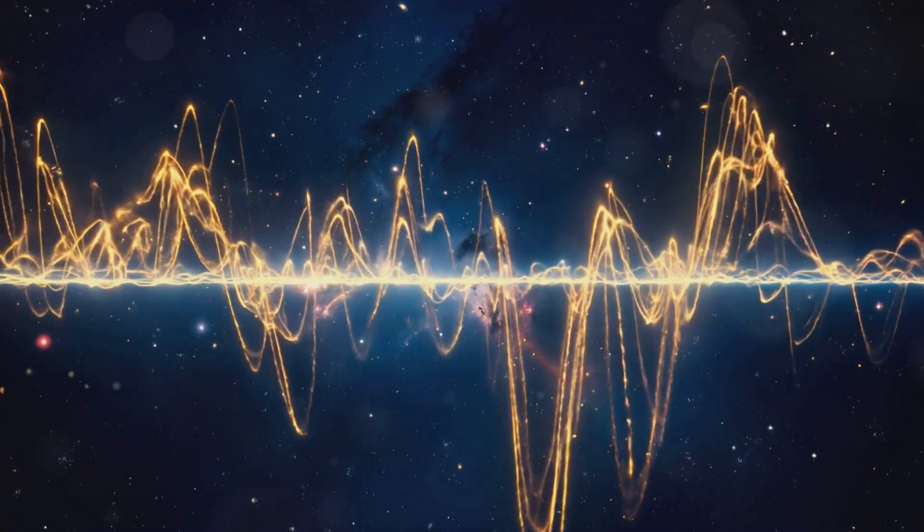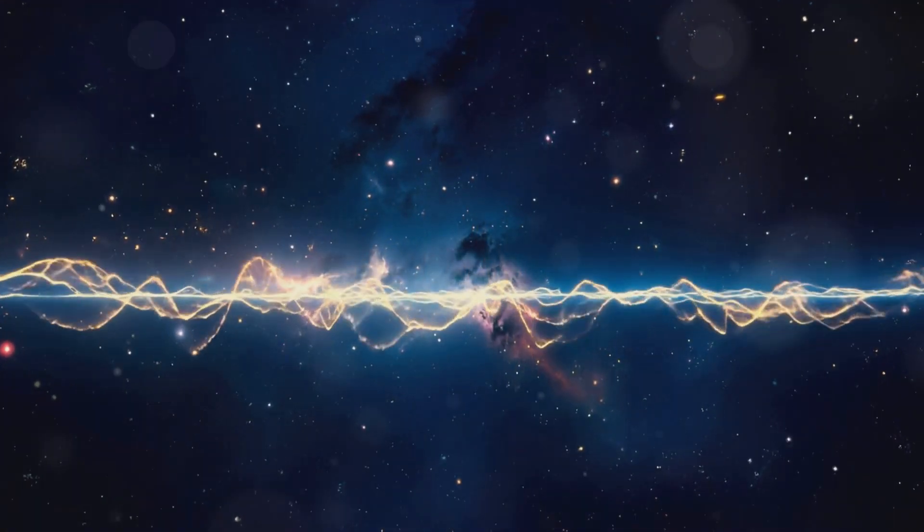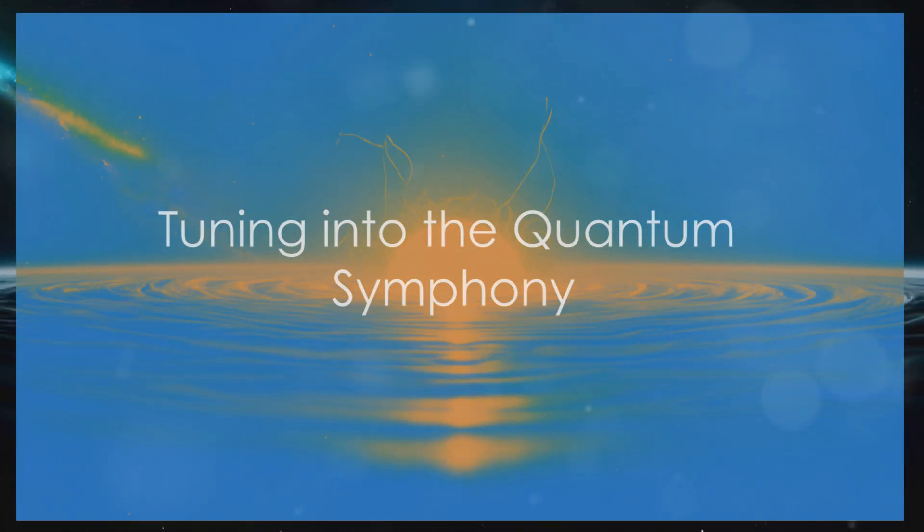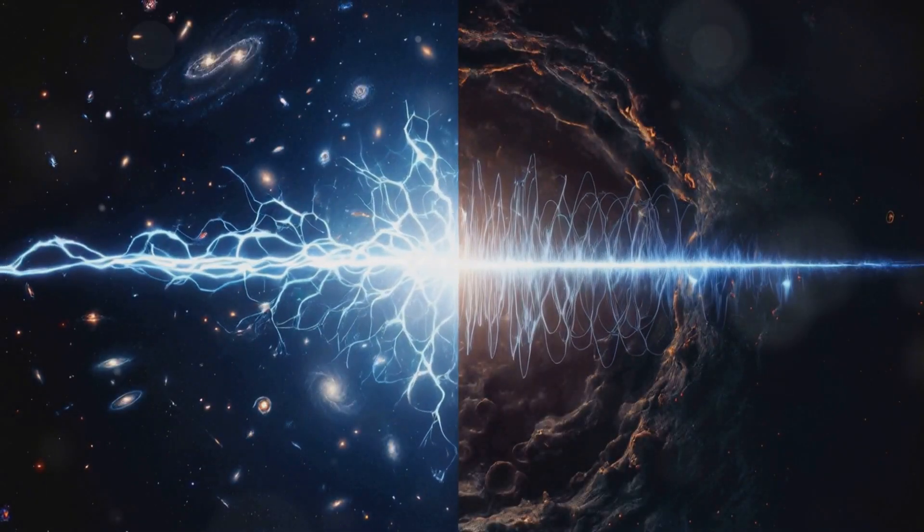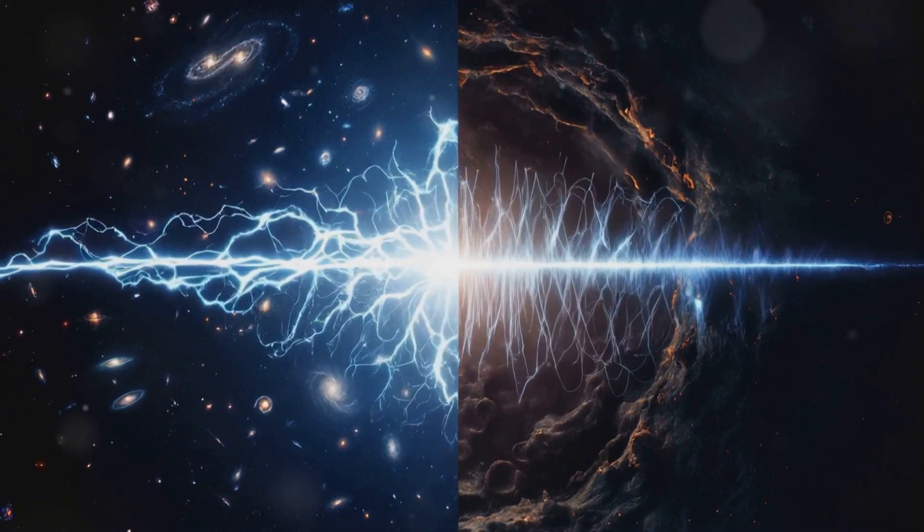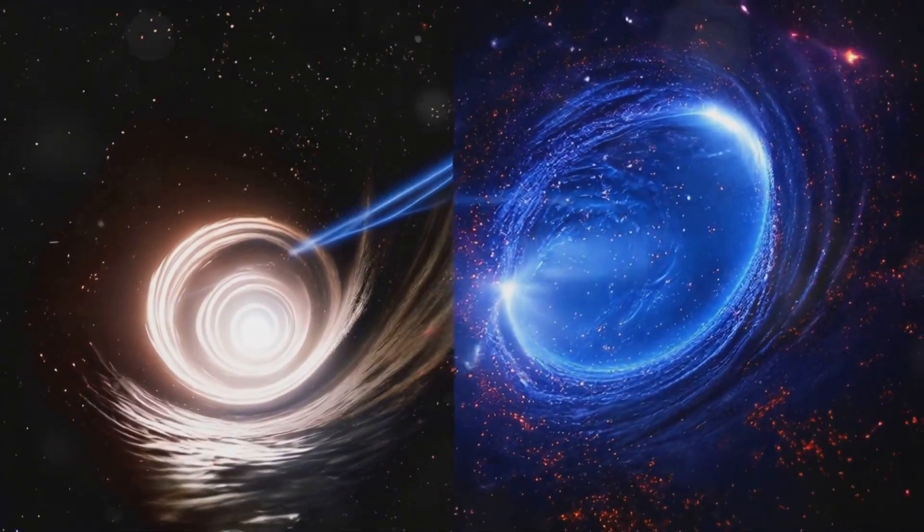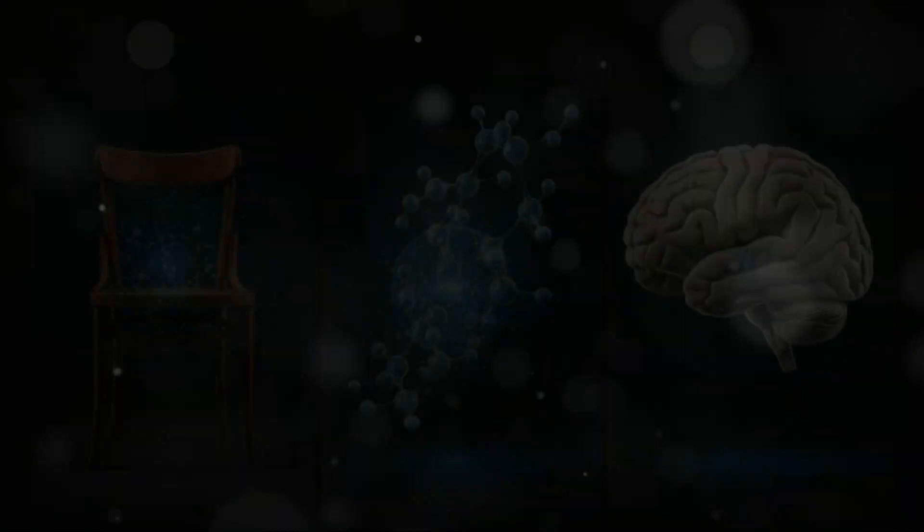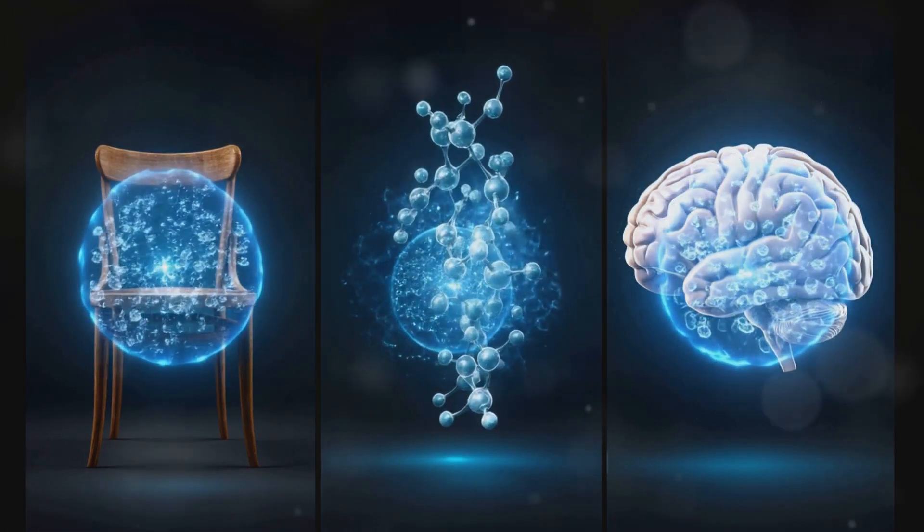Our brains, with their intricate networks of microtubules, have the potential to decode and interpret these signals. Just as a radio receiver needs to be tuned to a specific frequency to pick up a particular station, our brains need to achieve a state of quantum coherence to receive the cosmic broadcast. Think of Fourier transformation, a mathematical tool that breaks down complex signals into their individual frequencies. Our brains perform a similar process, filtering and interpreting the constant influx of quantum information from the Universe.